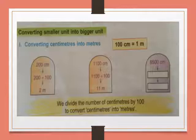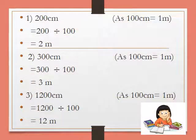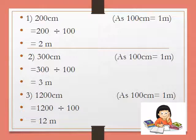So when we divide the number of centimetres by 100, we convert centimetres into metres. By dividing by 100 we can convert centimetres into metres. See here some more problems: 200 centimetres divided by 100 gives 2 metres; 300 centimetres divided by 100 gives 3 metres; 1,200 centimetres divided by 100 gives 12 metres, because 100 centimetres means 1 metre.